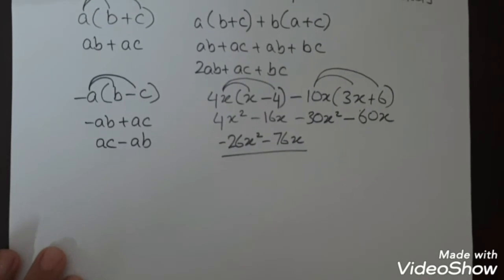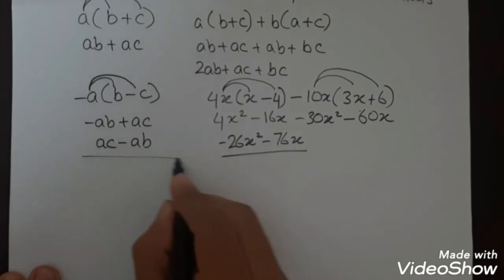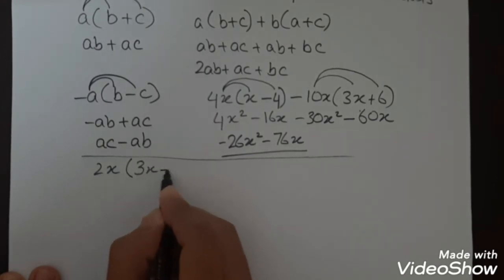The last equation for further expansion of brackets will be 2x(3x+1).